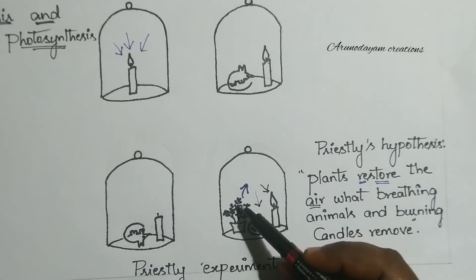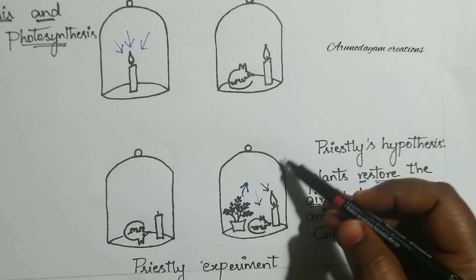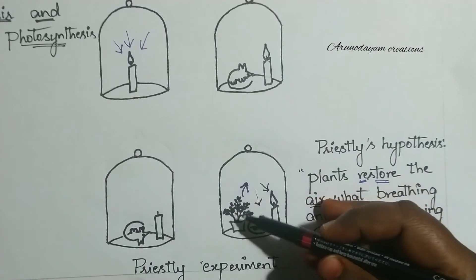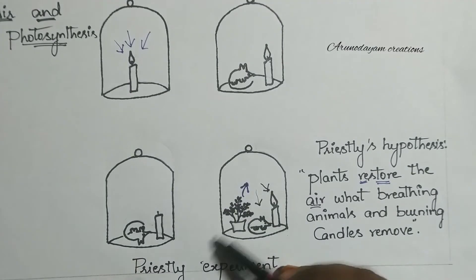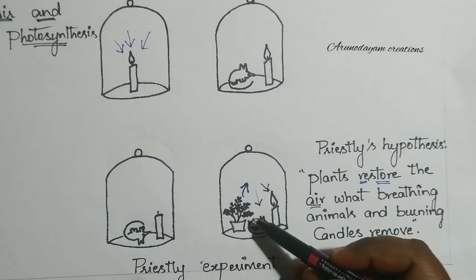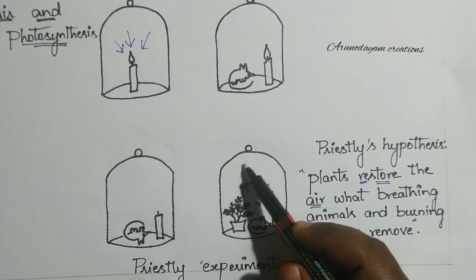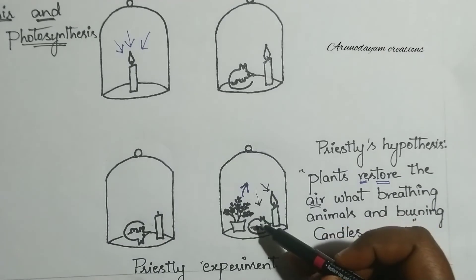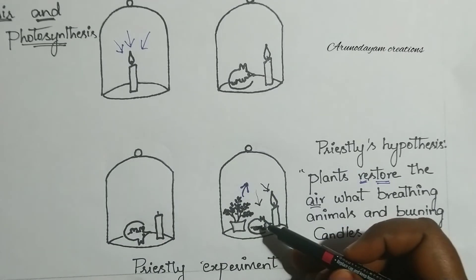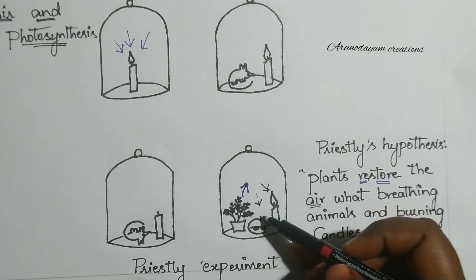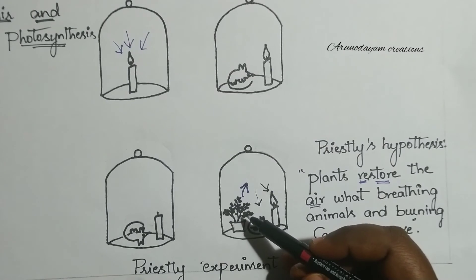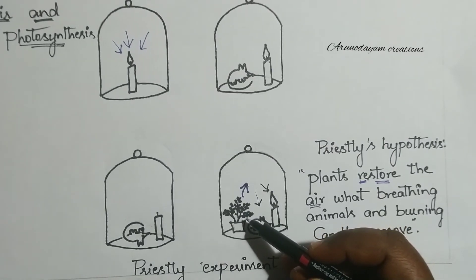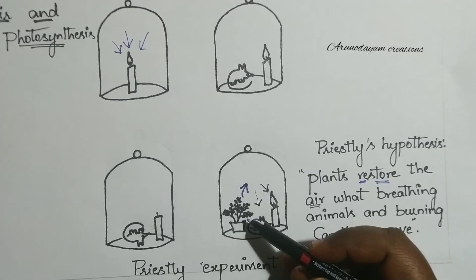The mint plant has chlorophyll and it is receiving sunlight through the glass jar. The glass jar already has a watered plant, so water is available. Carbon dioxide is also present inside the glass jar — the mouse is breathing and releasing carbon dioxide. So all conditions for photosynthesis are present.